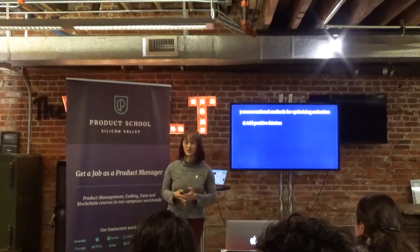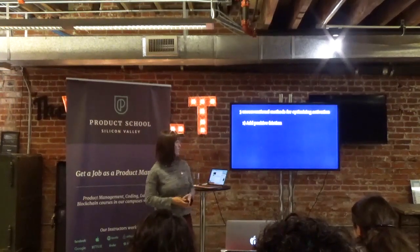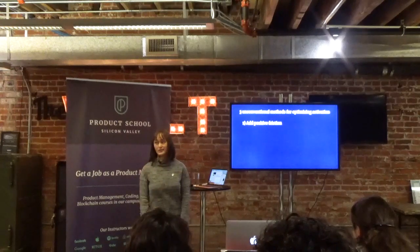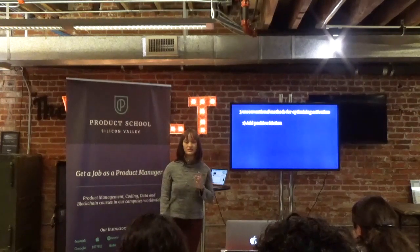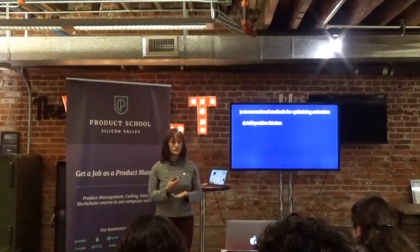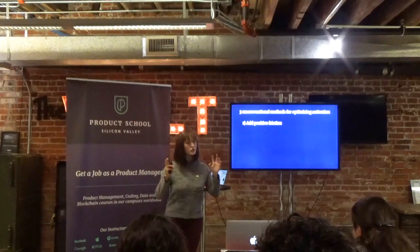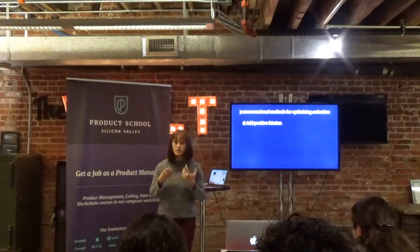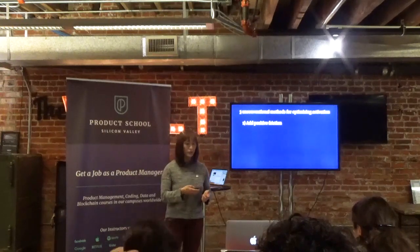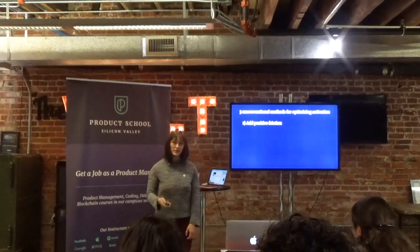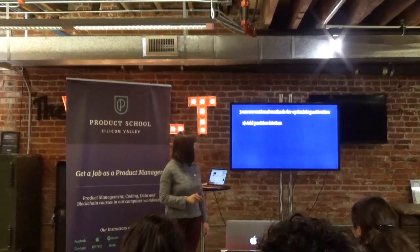There's a point at which you're not reducing cognitive load by removing things from your page — you're actually adding uncertainty. So rather than simplify your page, my first unconventional method for optimizing activation is to add positive friction. Positive friction is when you purposefully make your activation process less efficient, slower on purpose, in order to provide a better experience for your customers in the end.